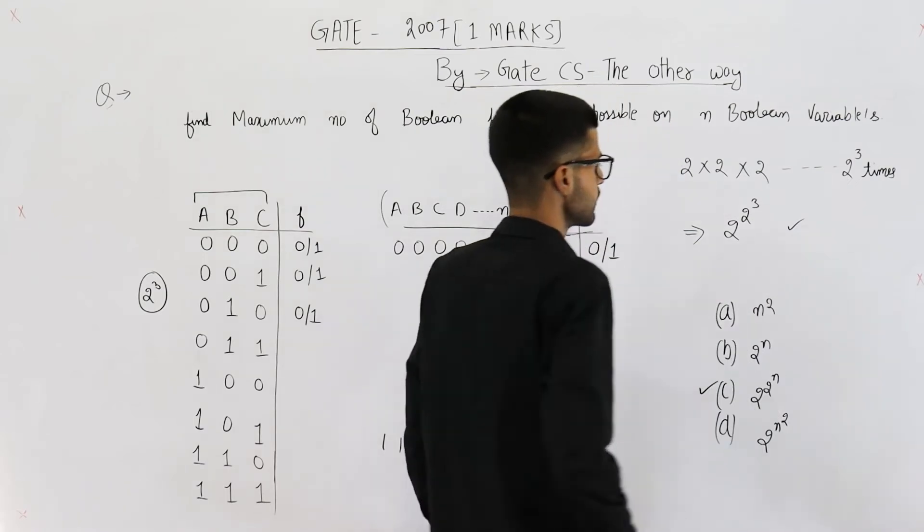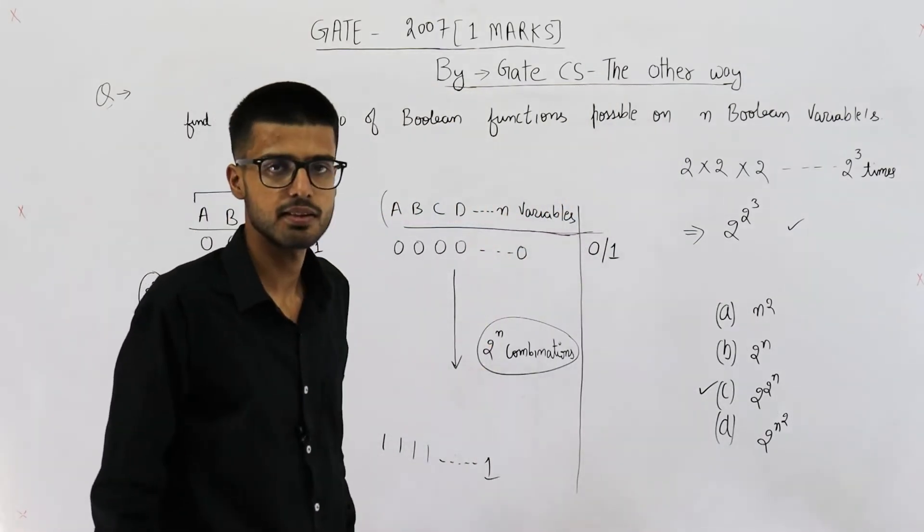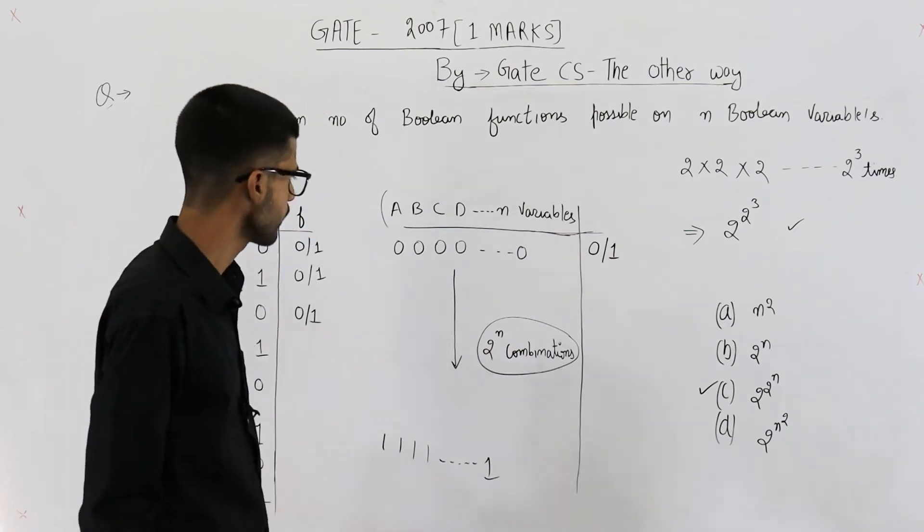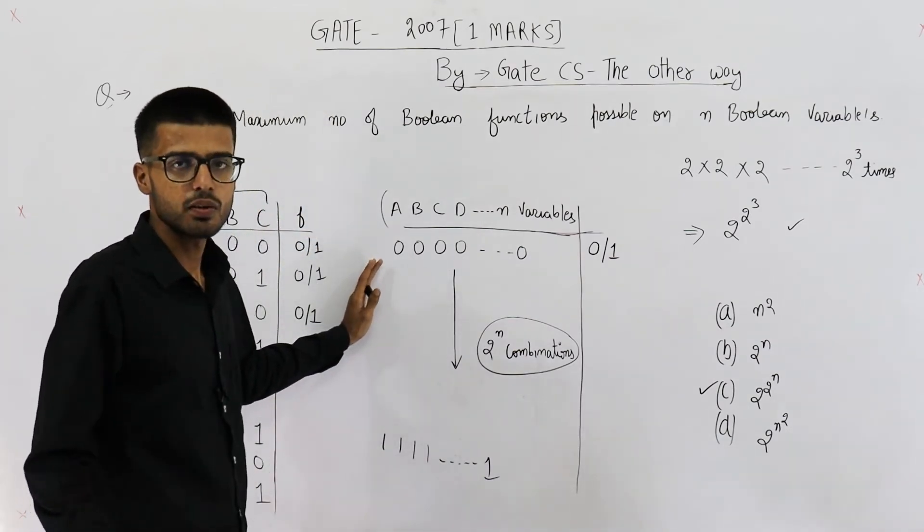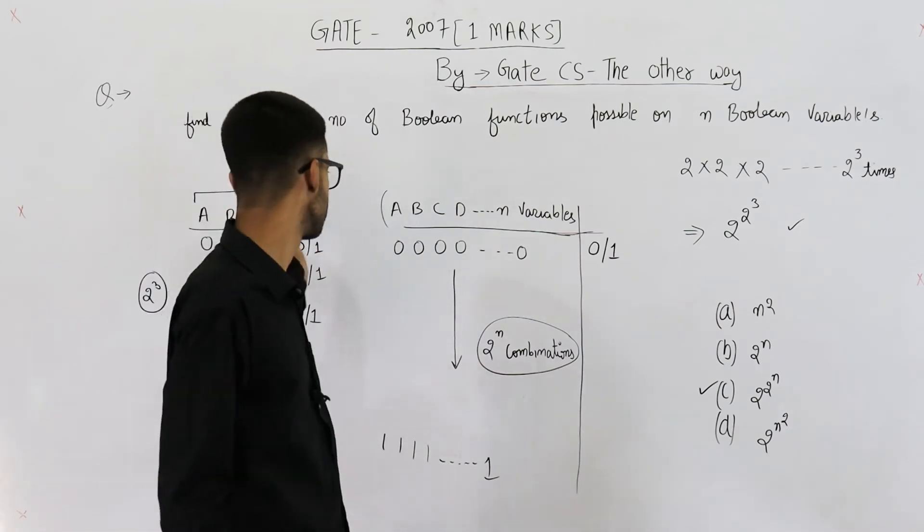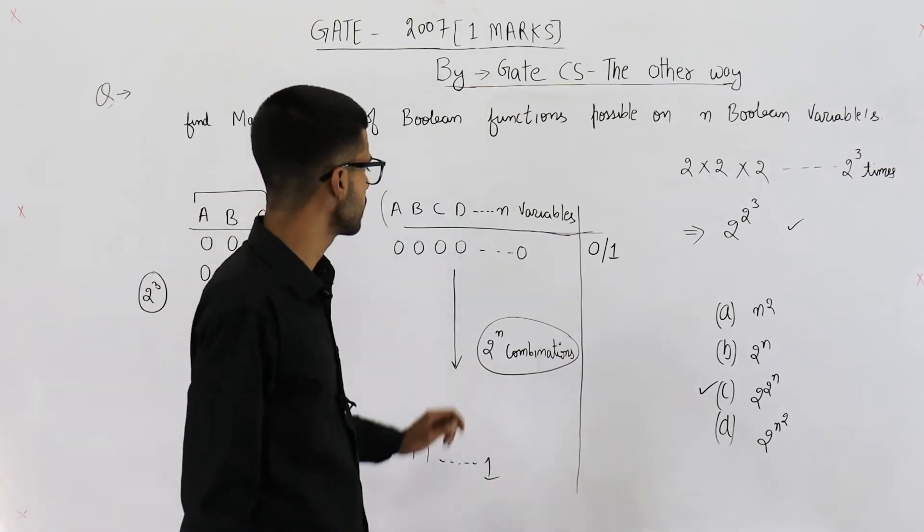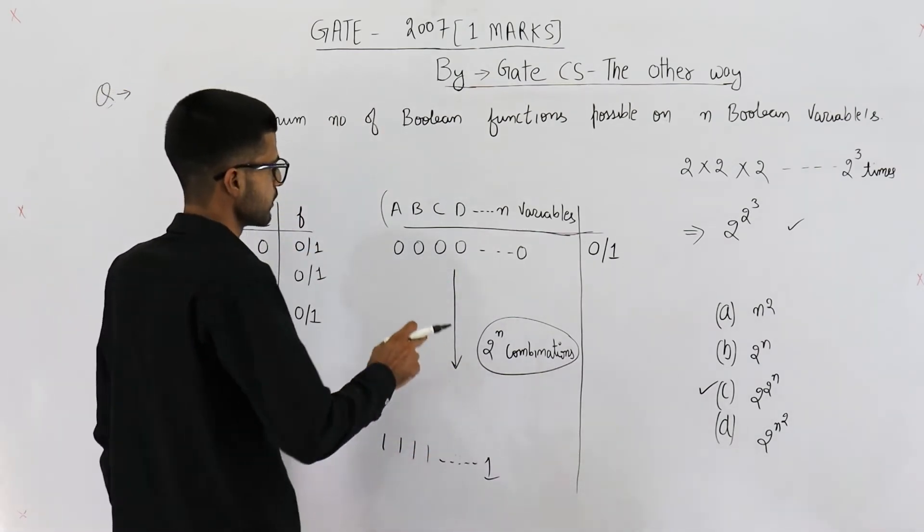So this is your answer when n is equal to 3. Now, let's analyze this general case. Let's keep value of n as it is. Let's not just take a value like here we did. Here we assumed n to be equal to 3. So here we'll keep n as it is.